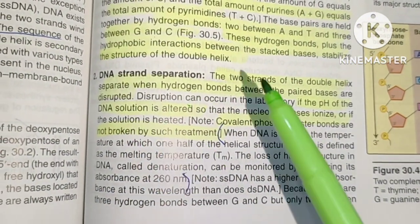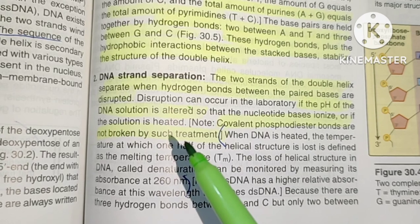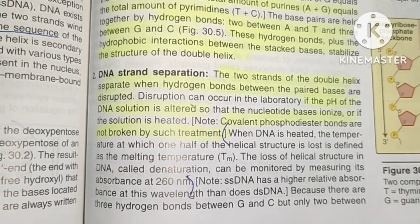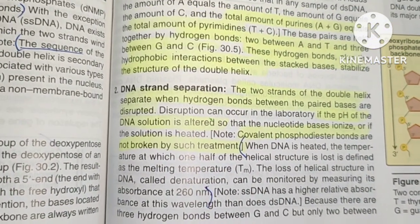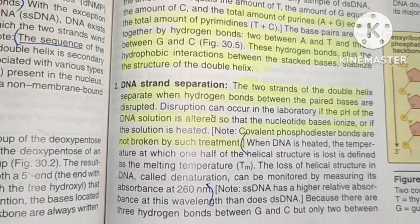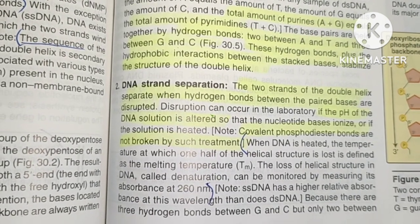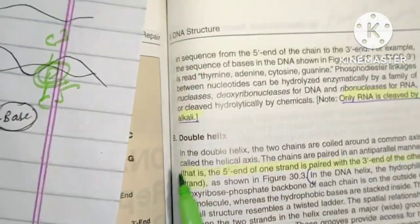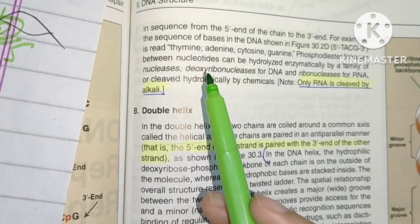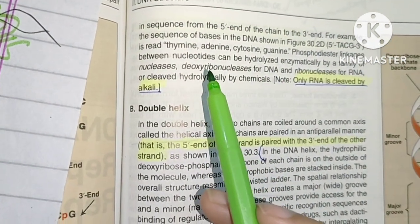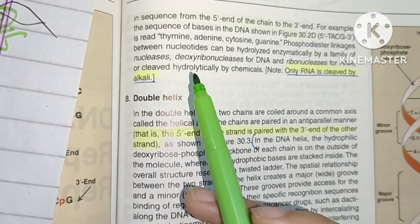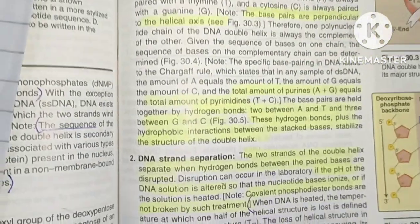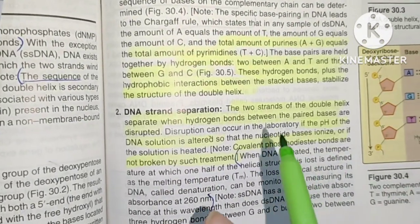To separate the two DNA strands, hydrogen bonds can be disrupted by heating the DNA solution. Covalent phosphodiester bonds are hydrolyzed using nucleases and deoxyribonucleases. Purines can also be eliminated hydrolytically by chemical means. The pH of the solution can also disrupt hydrogen bonds.